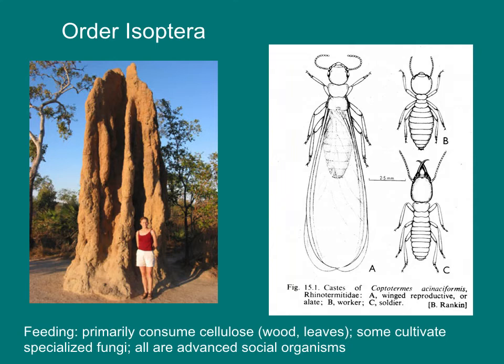Termites, the order Isoptera, are highly social insects that form massive soil and wood nests. They are most diverse in the tropics. Termites primarily consume cellulose, wood, and leaves, and some cultivate specialized fungi. All are advanced social organisms. The colony consists of a king and a queen and hundreds of thousands to millions of sterile workers.